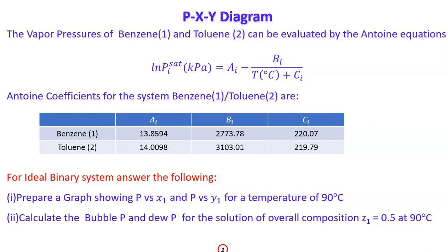For benzene (component 1), the Antoine constants A, B, and C are given, and for toluene (component 2), A, B, and C are also given. This is an ideal binary system. The first question is to prepare a P-X-Y diagram showing P versus X1 and P versus Y1 at 90°C, and then calculate the bubble point pressure and dew point pressure for an overall feed composition of Z1 = 0.5 at 90°C.